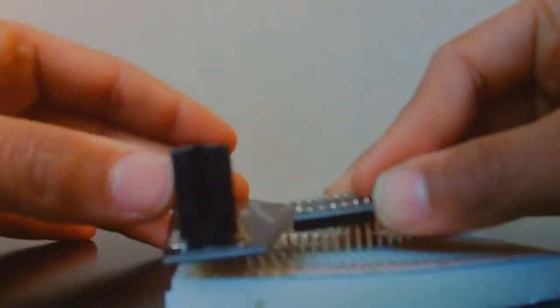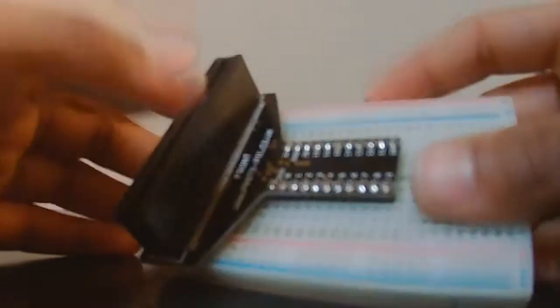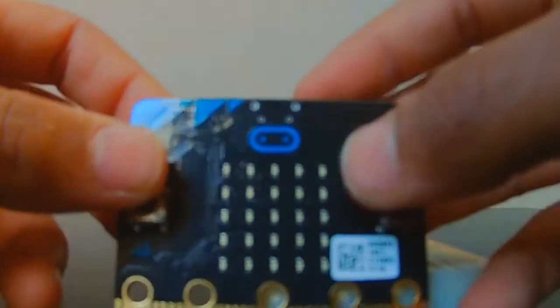So first you want to put your micro bit thing on the breadboard and insert your micro bit in.